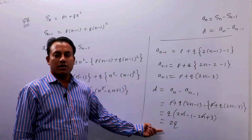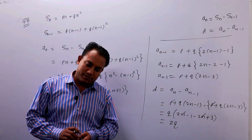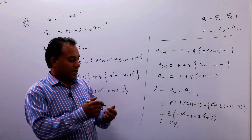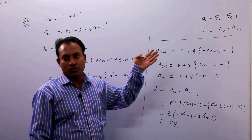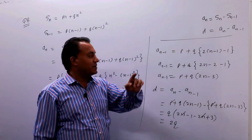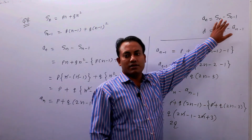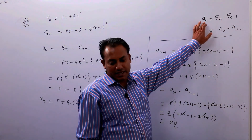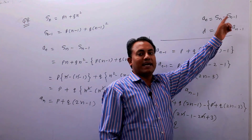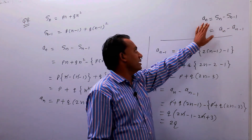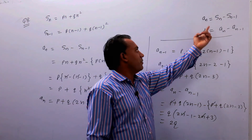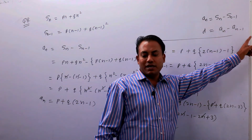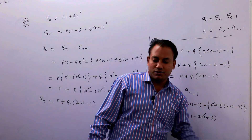यह रहा आपका common difference — 2Q। ऐसे करना है। तो आप समझ गए होंगे। एक बार summarize कर देता हूं: an = Sn minus S(n-1), फिर d = an minus a(n-1)। So this is how we will do it.